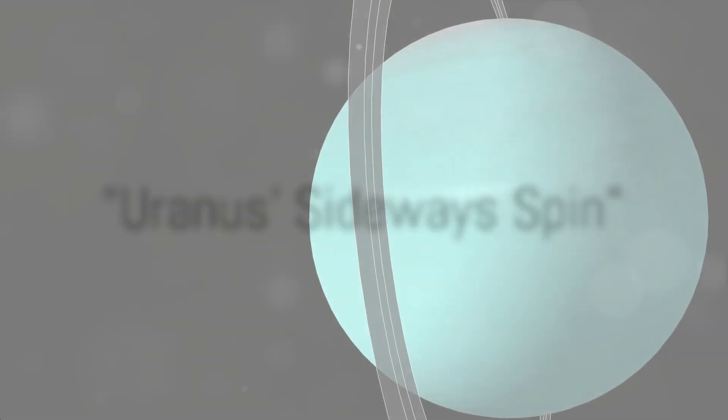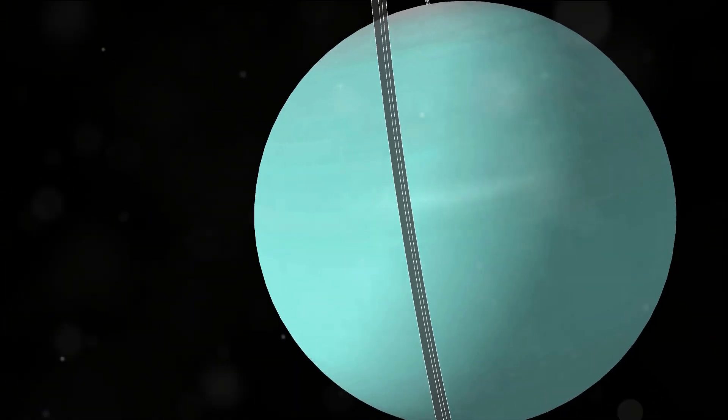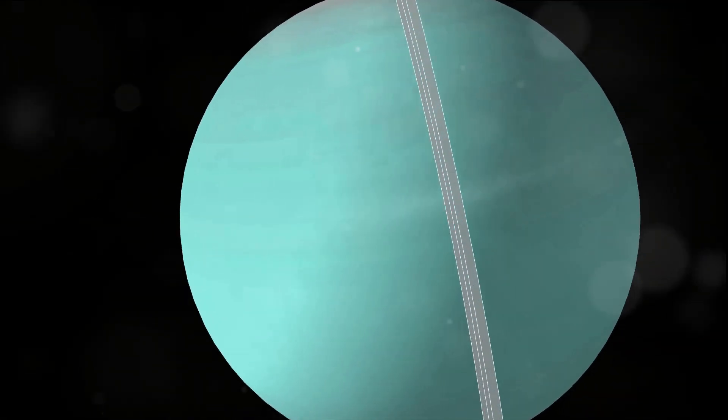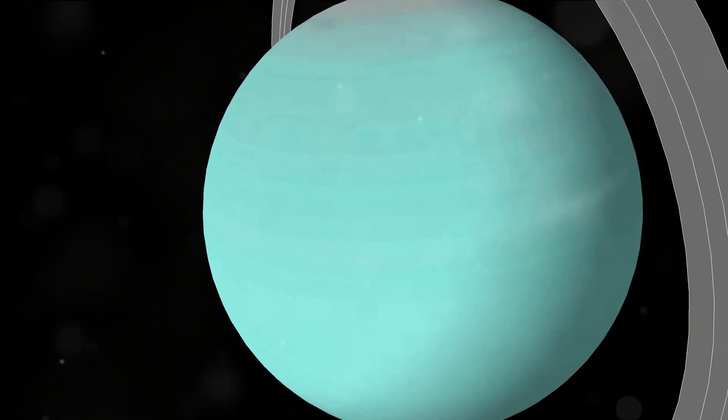At number 4, we delve into the peculiarities of Uranus's sideways spin. Now imagine a planet rolling around its orbit like a ball rather than spinning like a top. That's Uranus for you.